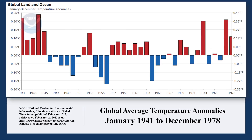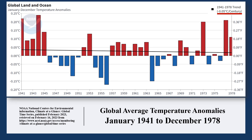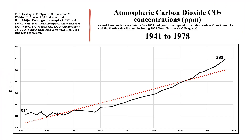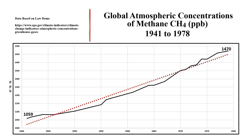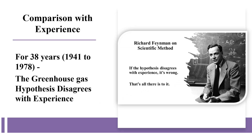The next period covers 38 years, from 1941 to 1978. This period also has a flat zero trend — indeed, measured per century, the trend is minus 0.05 degrees Celsius per century. As to the greenhouse gases over the same period: carbon dioxide concentration increased, methane concentration increased, and nitrous oxide concentration increased. For 38 years, the greenhouse gas hypothesis disagrees with experience.